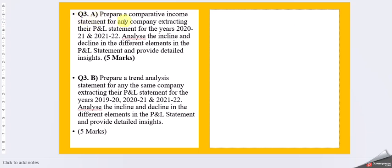Now Question 3A: Prepare a comparative income statement for any company extracting their P&L statements for the year 2020-21 and 2021-22. Analyze the incline and decline in the different elements in the P&L statements and provide detailed insights. Next, we have 3B: Prepare a trend analysis statement for any, the same company extracting their P&L statement. It can be any or it can be the same one you are going to do in part A. For the year of 2019-2020, 2020-21, 2021-22. Analyze the incline and decline in the different elements in the P&L statements and provide detailed insights.